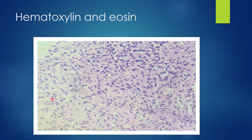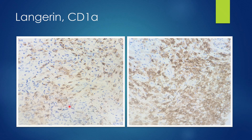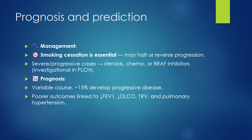In the histology image of this case, we can see a cellular nodule made up of round to oval cells with very irregular nuclear contours and eosinophilic cytoplasm, variably mixed with mononuclear cells and eosinophils. The cells are positive for Langerin as well as CD1a. S100 is showing cytoplasmic as well as nuclear positivity. On the basis of these findings, we diagnosed it as a case of Langerhans cell histiocytosis.